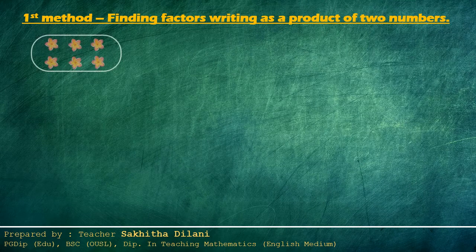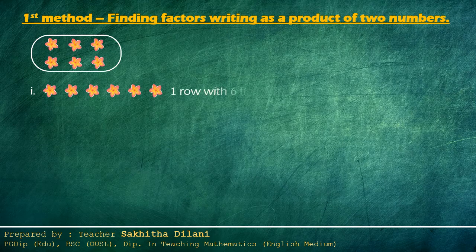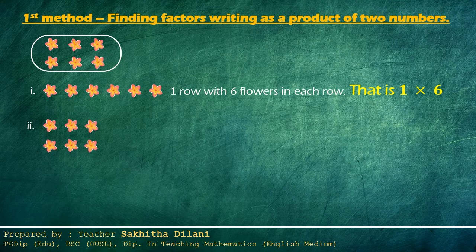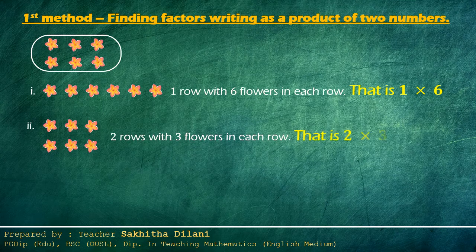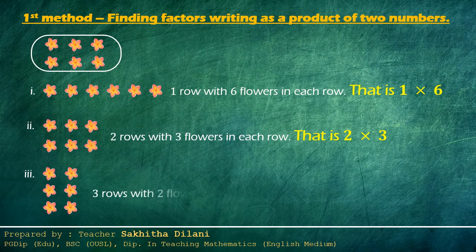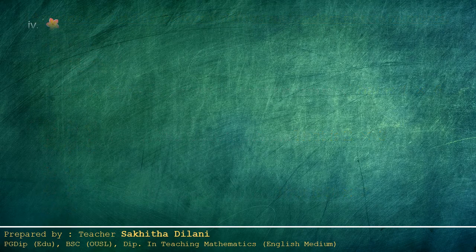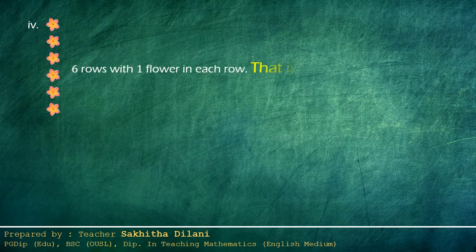Here you can see six flowers. We can arrange them in different formations. The first one: one row with six flowers in each row — that is, one times six. In the second formation: two rows with three flowers in each row, written as two times three. In the third formation: three rows with two flowers in each row — three times two. Fourth formation: six rows with one flower in each row — six times one.